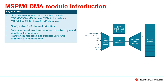Our DMA module supports 8-bit byte, 16-bit short word, 32-bit word, and 64-bit long word data types, including mixed byte and word data type transfers. The transfer content block size supports up to 64k transfers of any data type at a time.